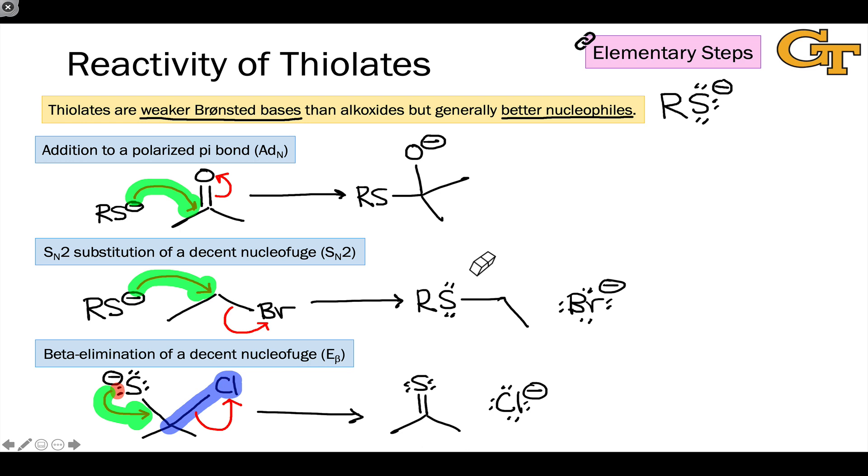So the important point to note in all three of these examples is that the thiolate is acting as a nucleophile at its anionic sulfur atom, and this theme of sulfur as nucleophile is something that comes up in reactions of thiols and thiolates in both laboratory and biochemical contexts.